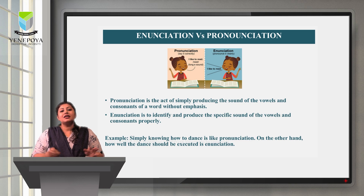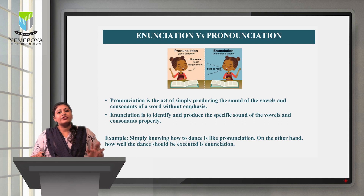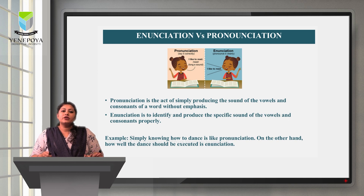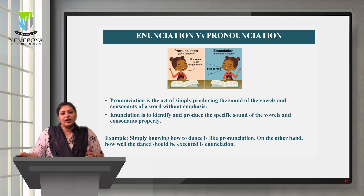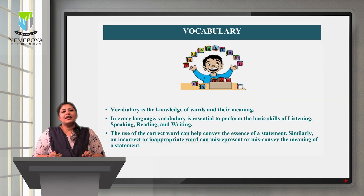Let us look at the difference between enunciation and pronunciation. Pronunciation is the act of producing sounds of vowels and consonants of a word — it can be right or wrong. Enunciation is identifying and producing specific sounds of vowels and consonants properly. A useful analogy: pronunciation is like how you dance — any which way — while enunciation is how well you dance and how well you execute that dance.